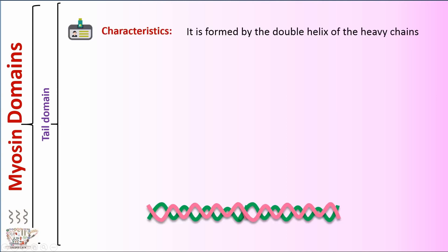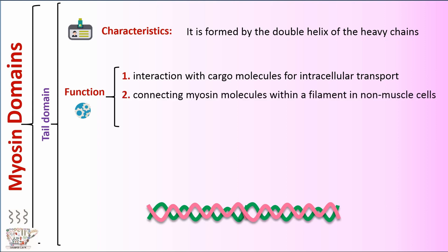The third domain is tail domain. It's formed by the double helix of the heavy chains. Tail domain plays a role in interaction with cargo molecules for intracellular transport, in connecting myosin molecules within a filament in non-muscle cells, and in regulating the motor activity of the cell.